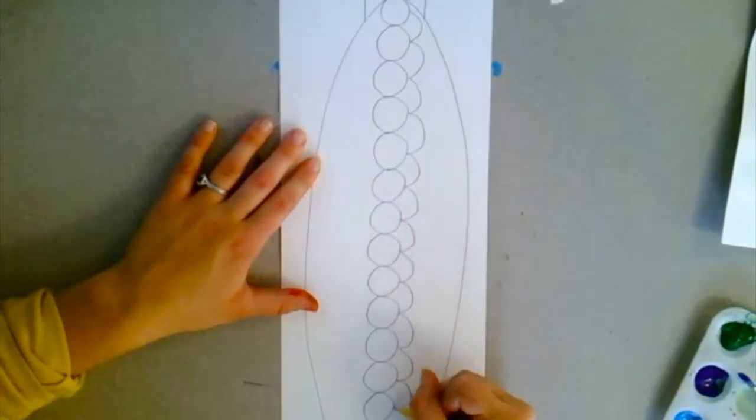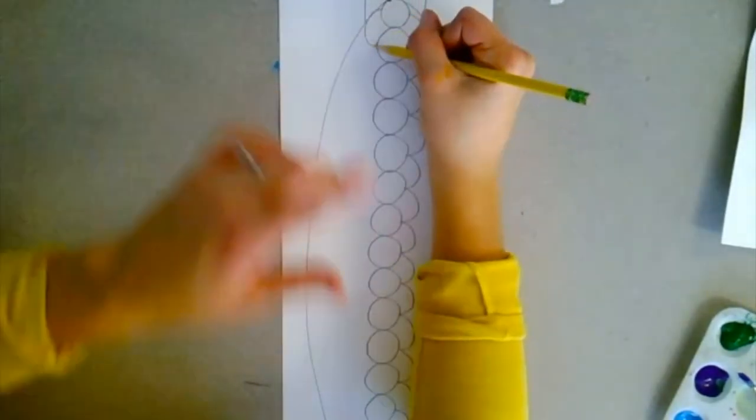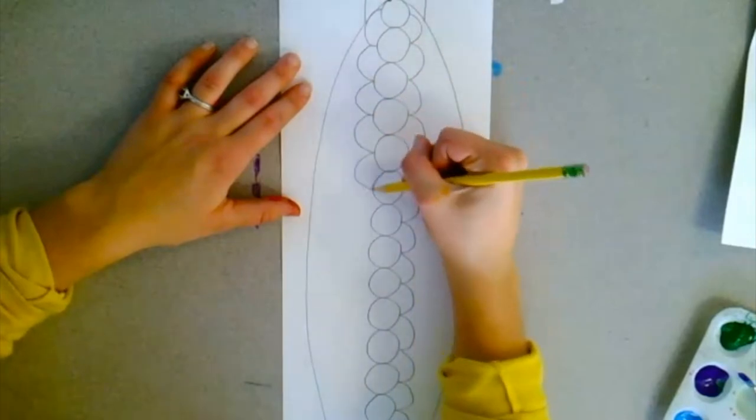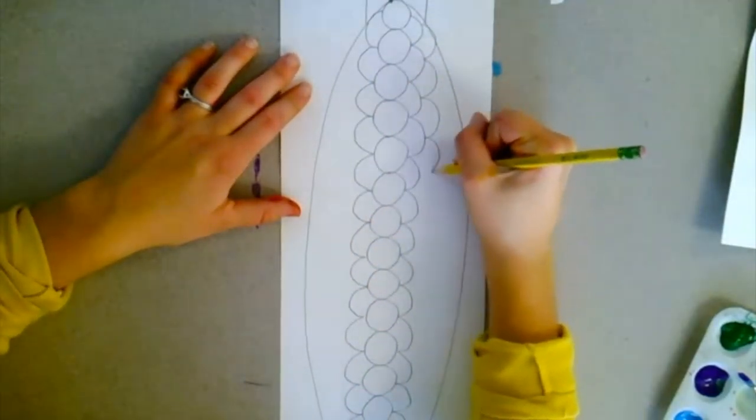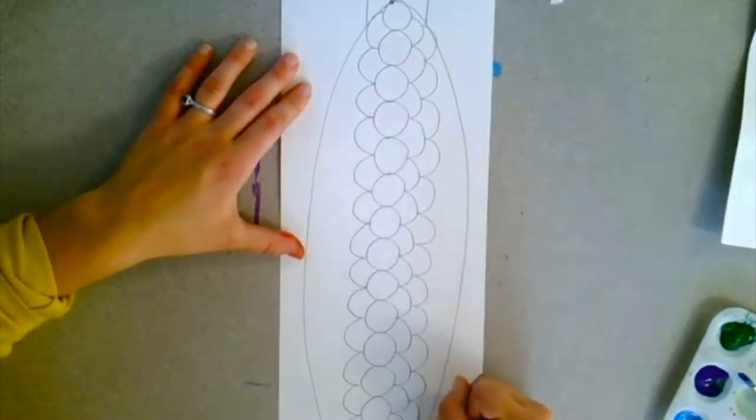Then you're going to add the next row of kernels by pretending you are jumping from the middle of one circle to the middle of the next circle over and over again until you reach the edge of your corn.